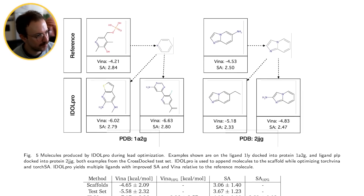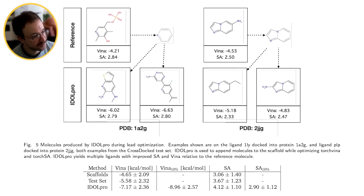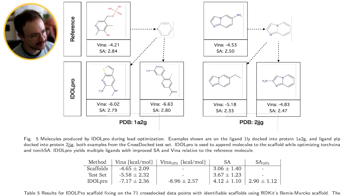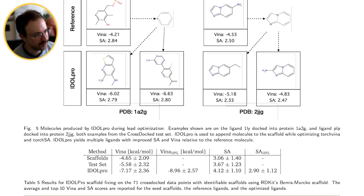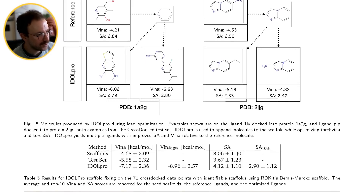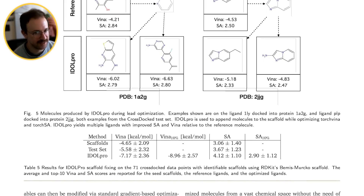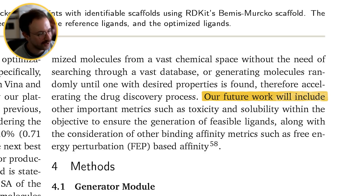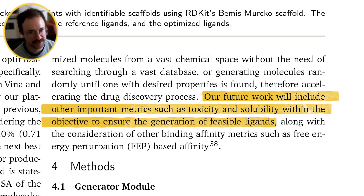We have results in our paper analyzing IdlePro's performance on a lead optimization task using the CrossDock dataset, which contains 100 protein-ligand pairs. We take the scaffolds from each ligand and run lead optimization with IdlePro. For all but one target, we produce a new molecule with both better binding affinity and synthetic accessibility than the seed molecule. Future directions include integrating additional scoring functions — such as toxicity, solubility, and other properties relevant to medicinal chemists — to produce ligands that can be synthesized and used in a lab setting as quickly as possible.